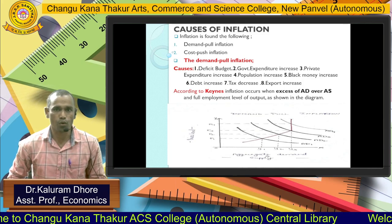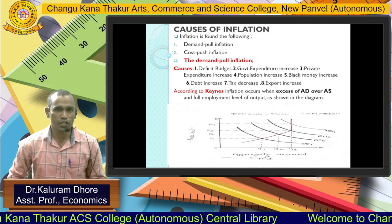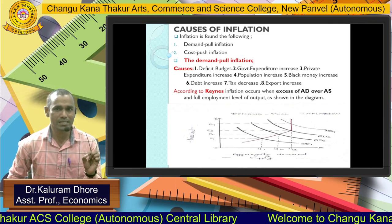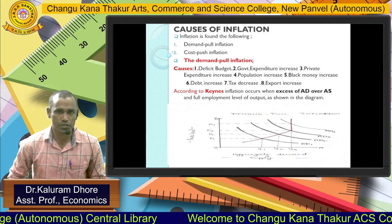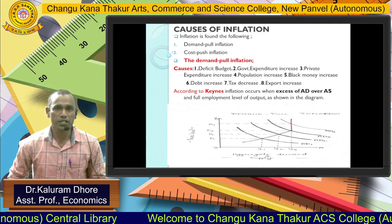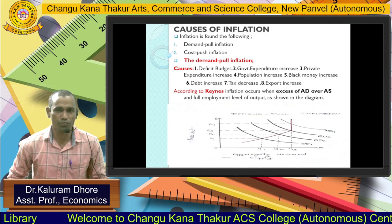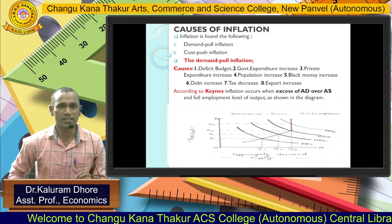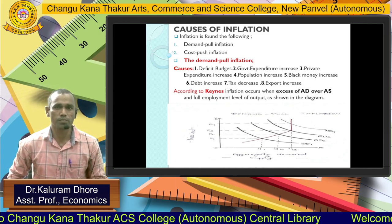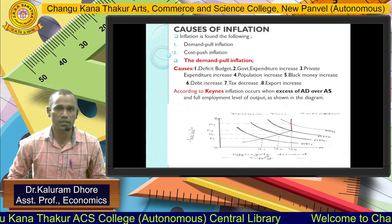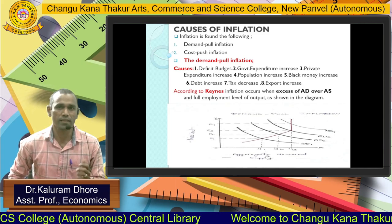First, we discuss demand-pull inflation. Demand-pull inflation means an increase in the demand for particular goods causes a rise in the price of goods. Prices keep increasing as long as we continue demanding such commodities, goods, and services. These are the causes behind demand-pull inflation.